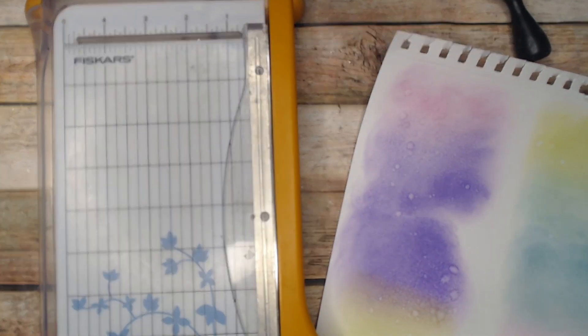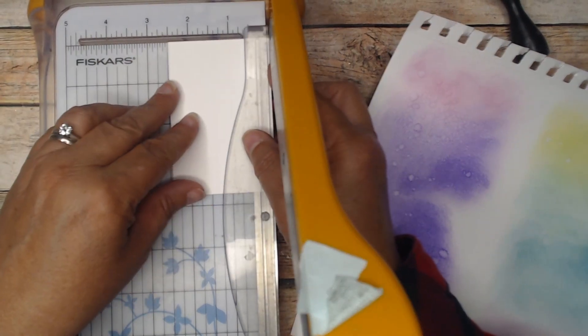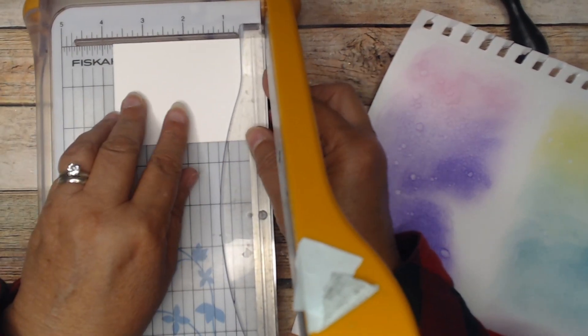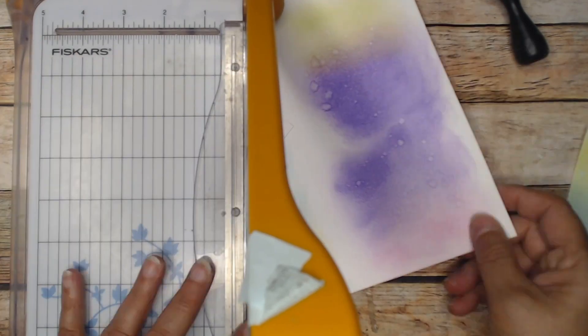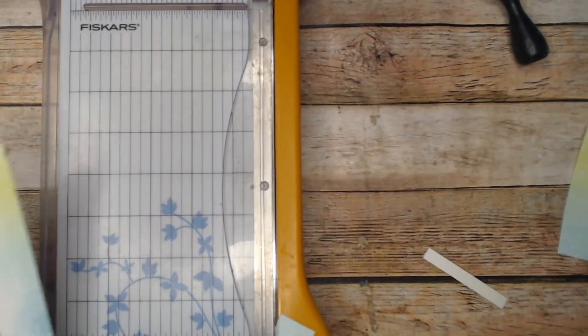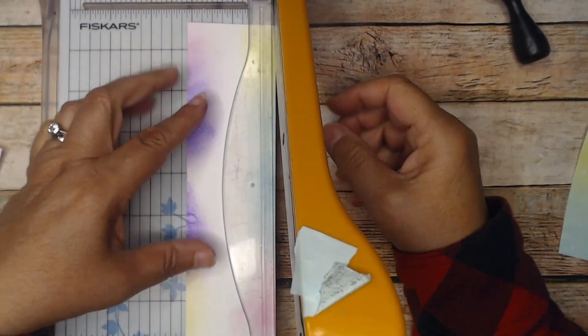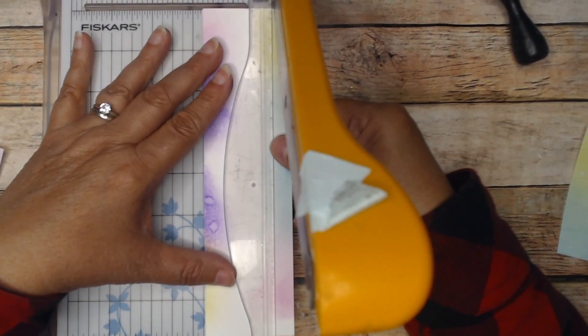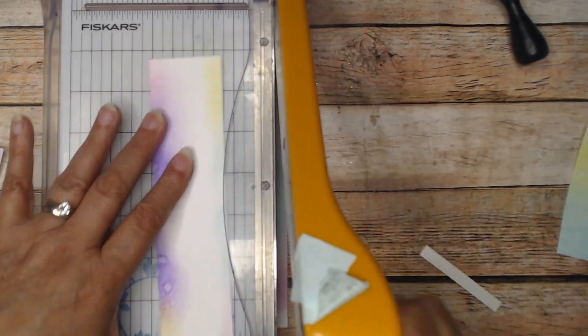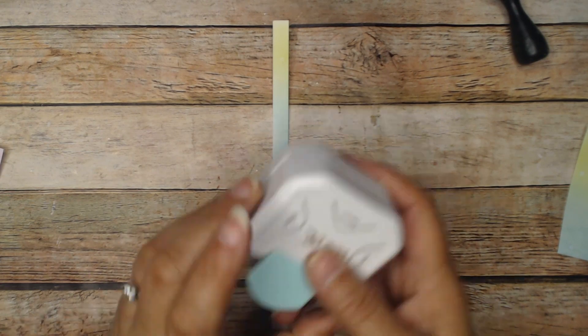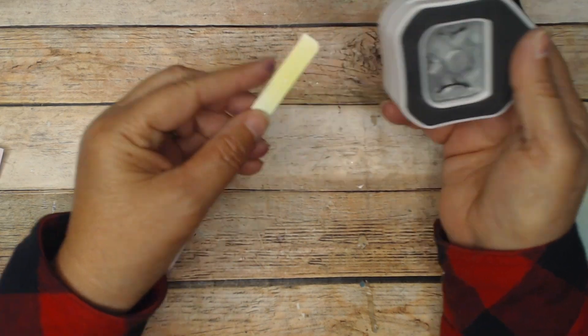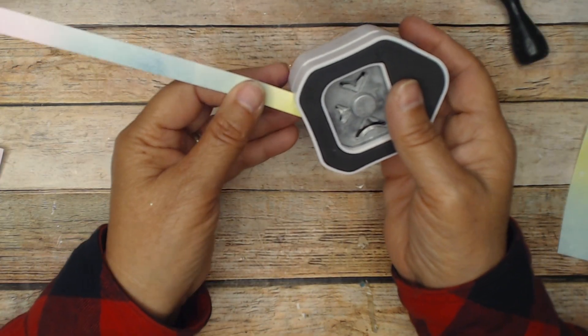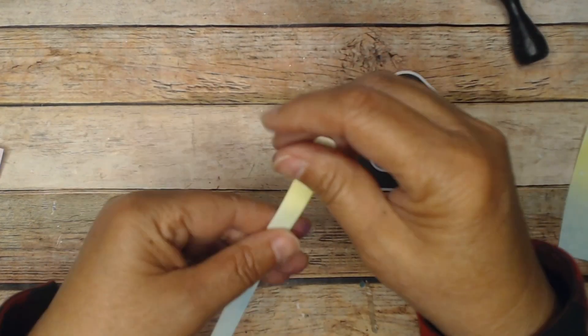All right, now I'm going to cut these down to two and a half by three and three quarters. And I'm going to take a piece here, cut it down to about half an inch. And I'm taking a corner rounder using the smallest corner. I'm going to put it in there, cut once there, once there, so we have rounded corners.